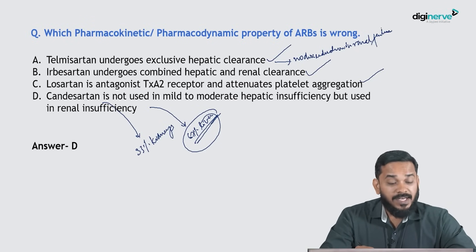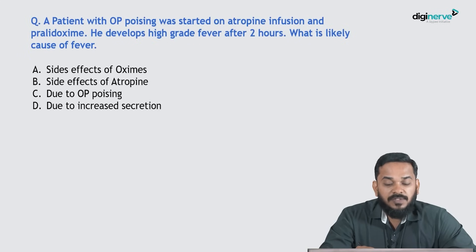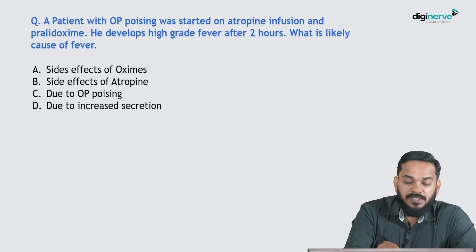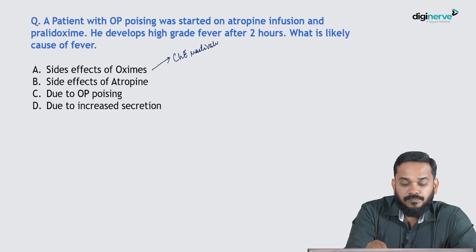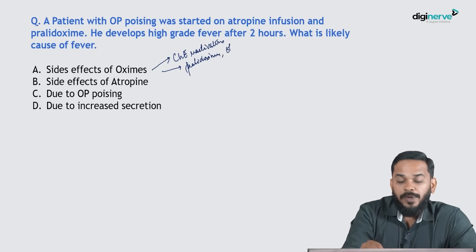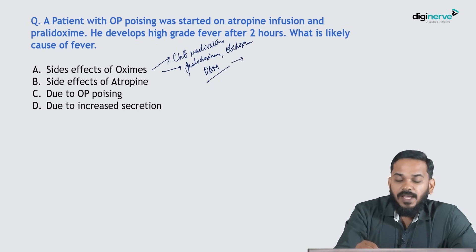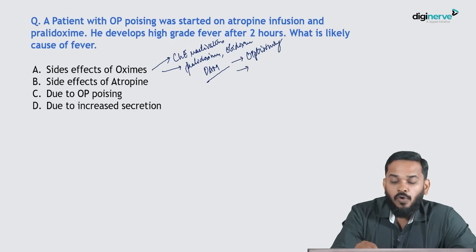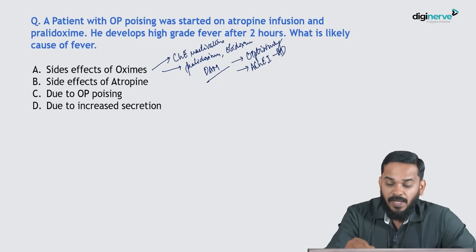A patient with organophosphate poisoning was started on atropine infusion and pralidoxime. He develops high-grade fever after two hours — what is the likely cause? Oximes are cholinesterase reactivators. Three oximes are available: pralidoxime, obidoxime, and diacetylmonoxime. They are used in organophosphate poisoning, overdose of acetylcholinesterase inhibitors in Alzheimer's disease, and myasthenia gravis.